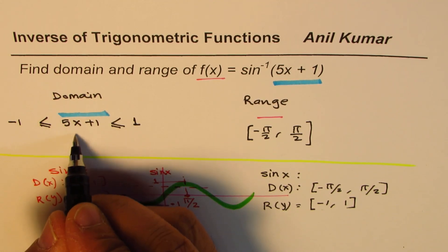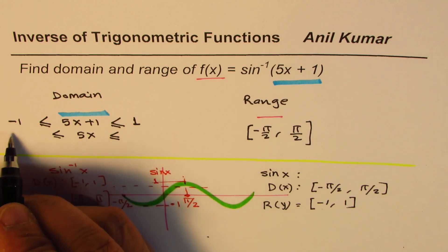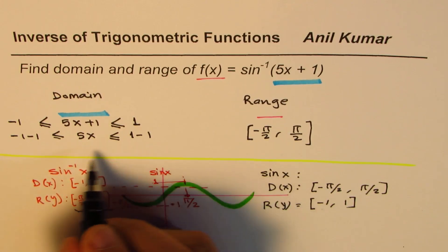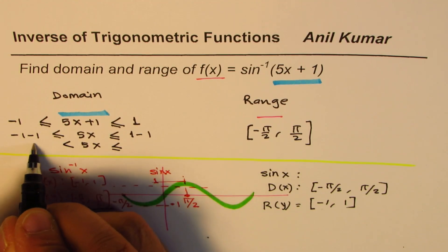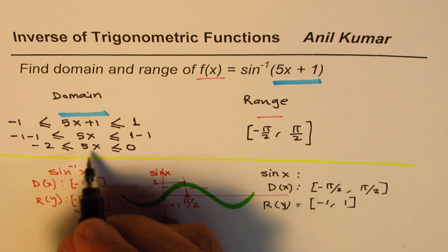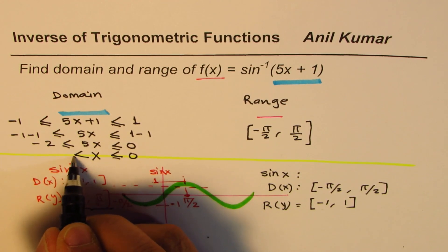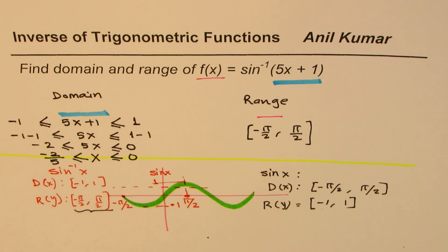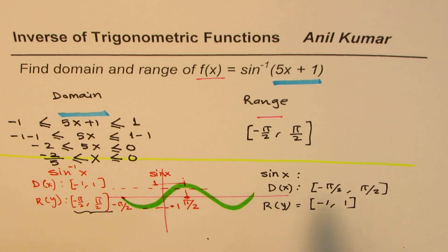So we can subtract 1 from both sides. So we have 5x is less than or equal to. When we take away 1, minus 1, minus 1, and 1, minus 1, right? So what we get here is that 5x is less than or equal to, this is minus 2, and this is 0. And now we can divide by 5. When you divide by 5, you get your result, where x is less than or equal to 0, and is greater than or equal to minus 2 over 5. Do you see that?